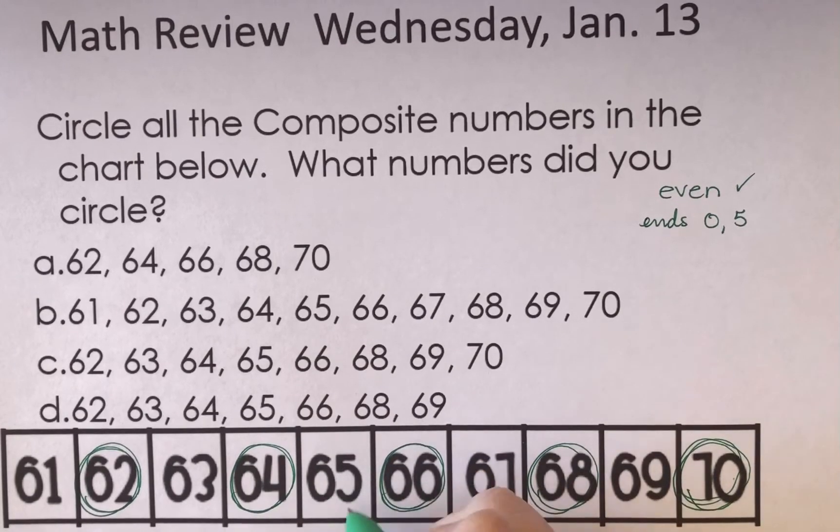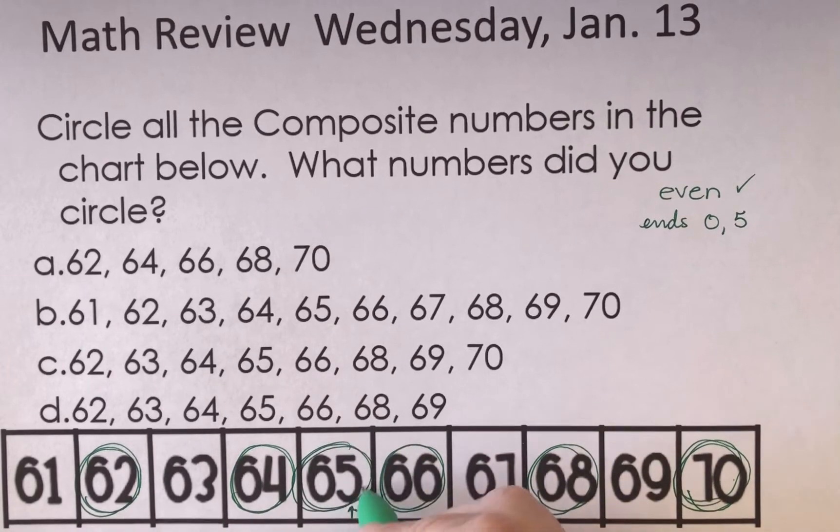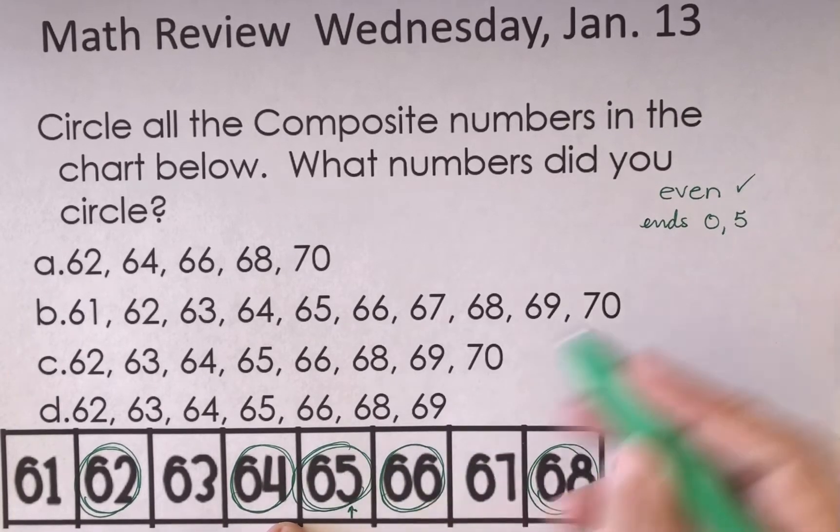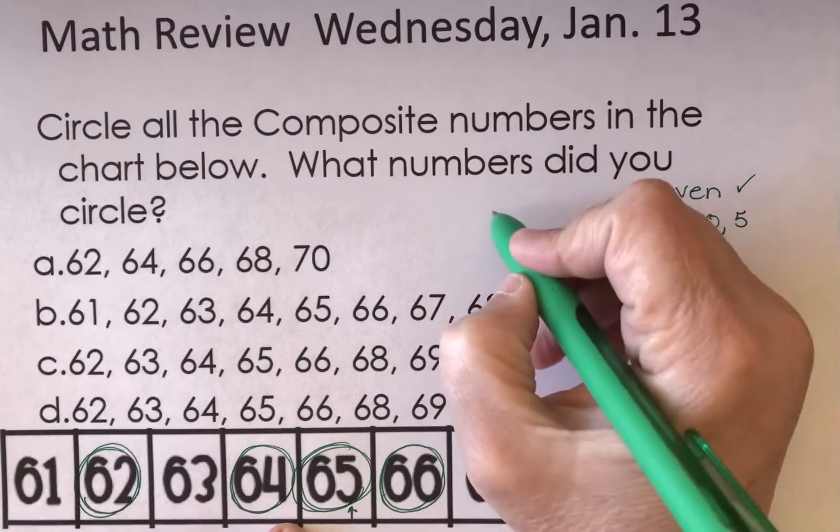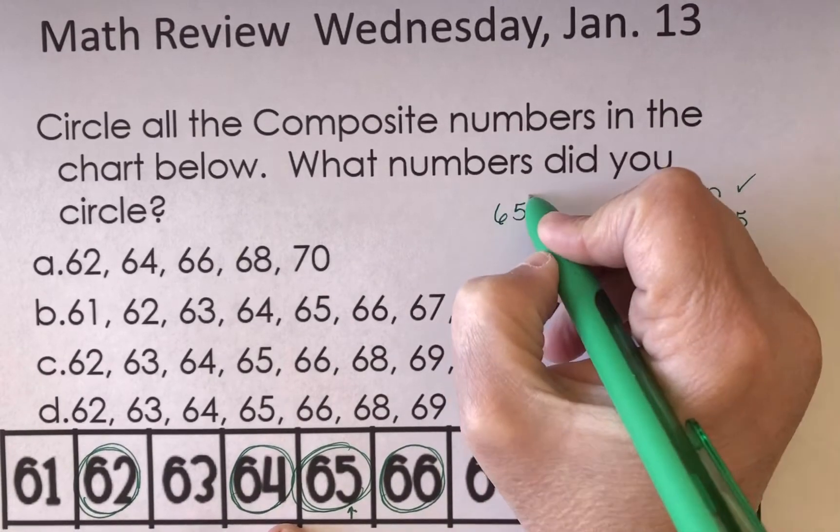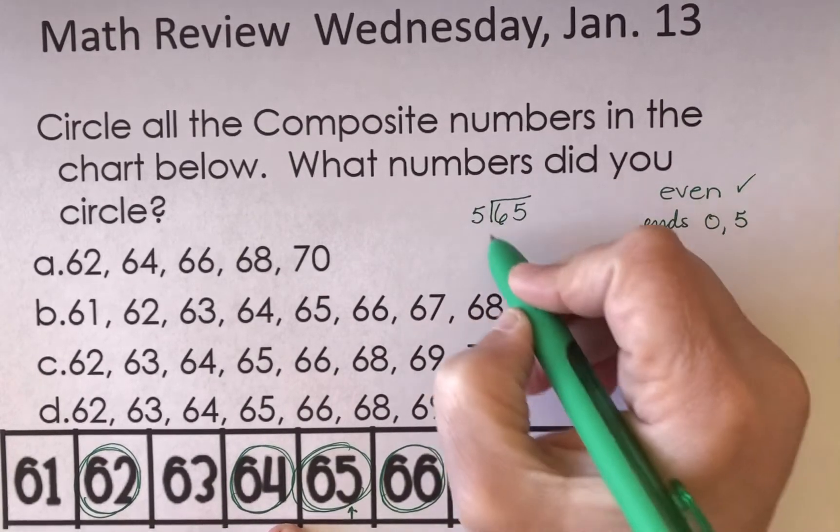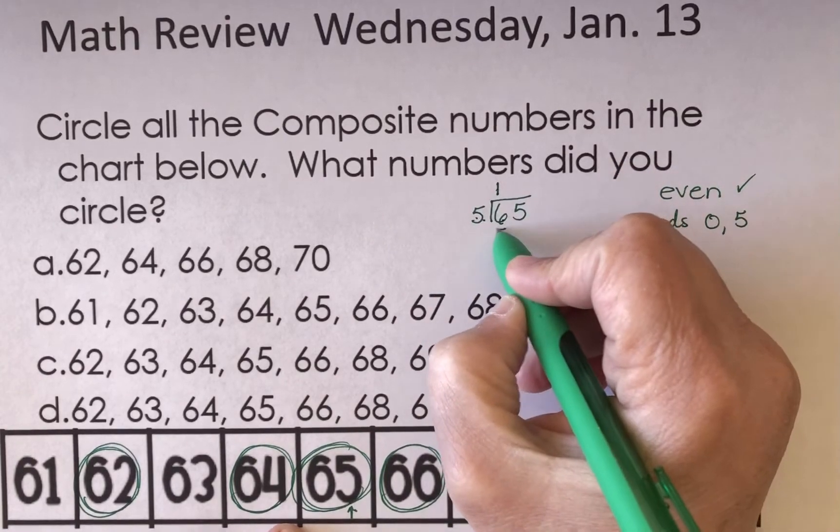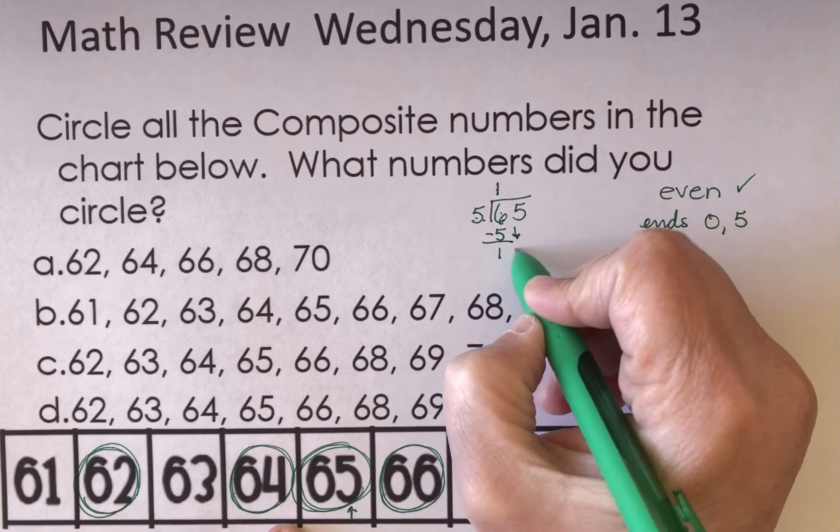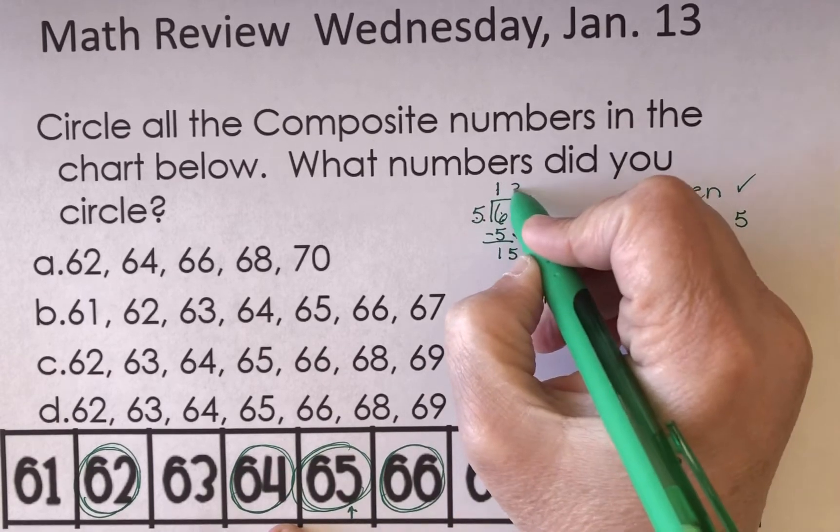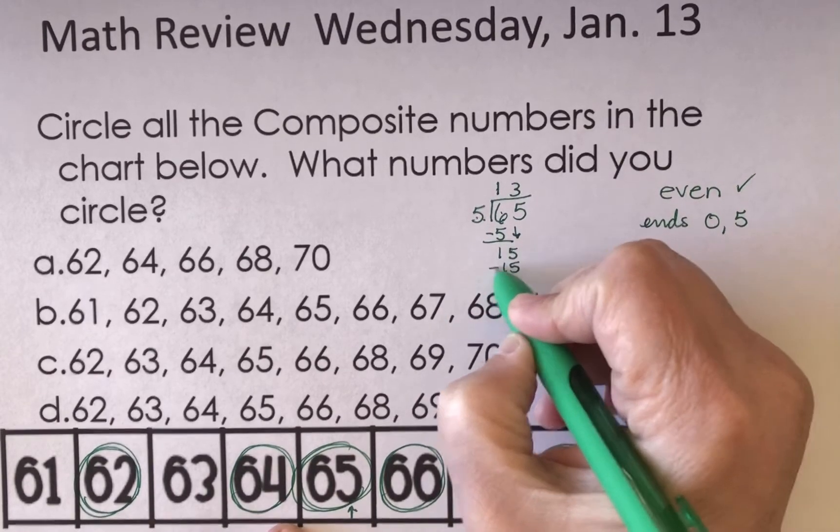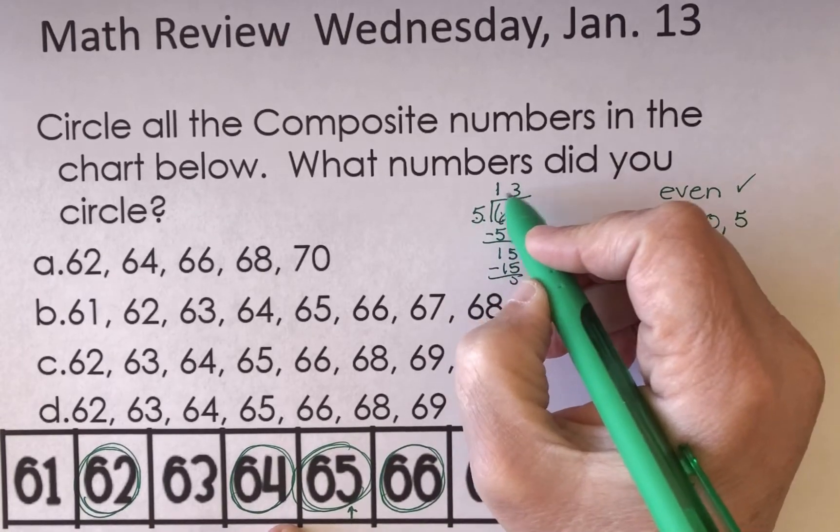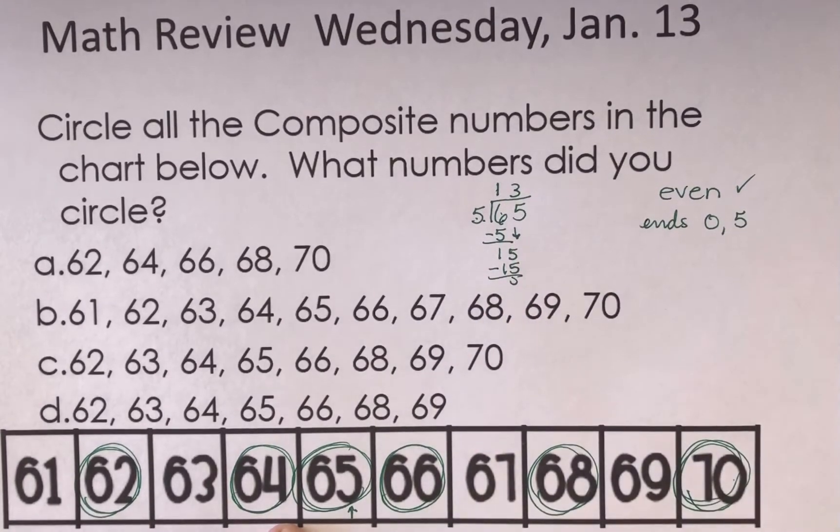All right, 65 has a 5 in the ones place. 65 is a composite number. If I take 65 and I divide it by 5, 5 goes into 6 one time. 1 times 5 is 5. I subtract, I get 1. I bring down the 5. 5 times 3 is 15.